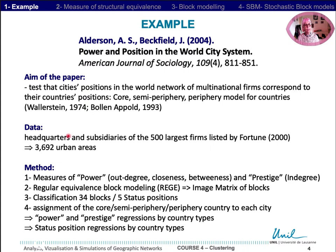The data used is headquarters and subsidiaries of the 500 largest firms, and they identify 3,692 urban areas.